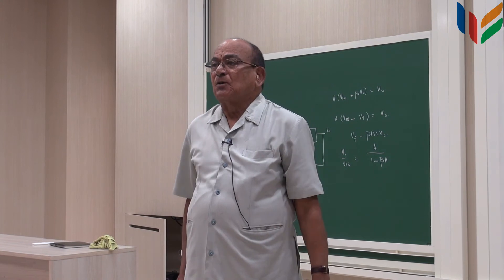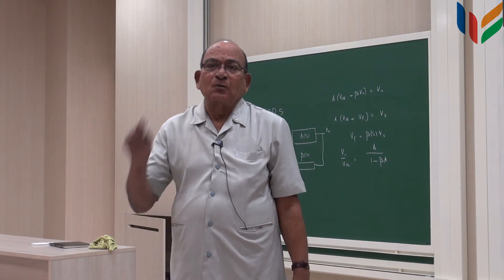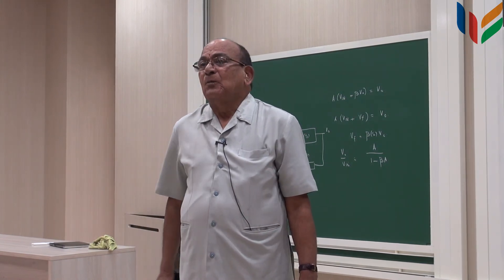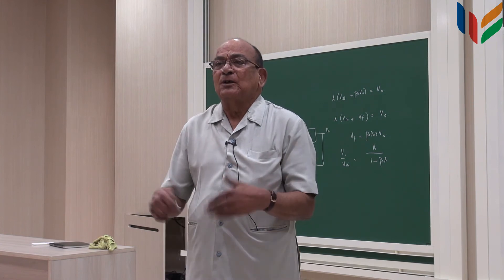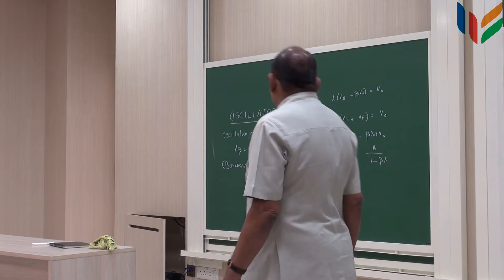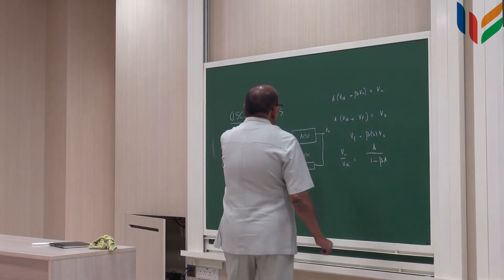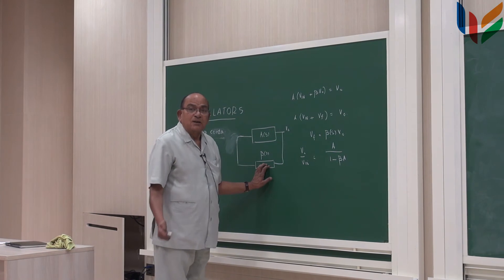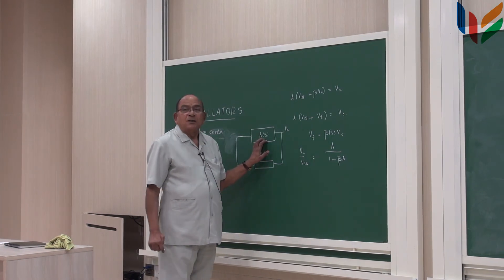So, to keep this amplitude almost constant, you need to have some amount of power that is to be put into the system, so that you go on keeping the amplitude constant. So, this is a passive network generally, and this is an active network.